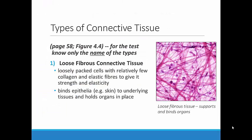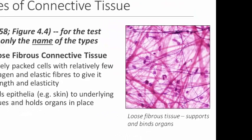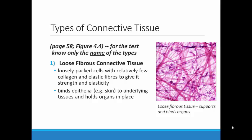When it comes to learning about connective tissue for the test, you should focus on knowing the names of the different types. First, we have loose fibrous connective tissue. As you can see from the diagram, these cells are very loosely packed together and they're running every which way with no sense of organization. You find this type of connective tissue underneath the skin and also throughout the body cavities where it works to hold tissues and organs in place. You can think of this tissue as acting like filler — almost like the newspaper or packing peanuts you would add to a package before sending it in the mail.